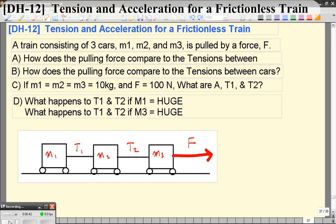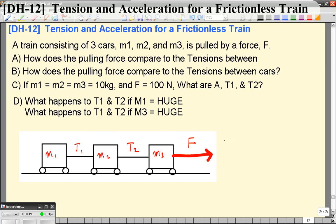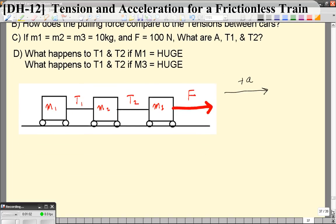So to start off with, we're going to have to pick a direction of positive acceleration. Relatively straightforward with this one. I'm going to pick to the right as the direction of positive acceleration. We're going to label free body diagrams for each of the three blocks.